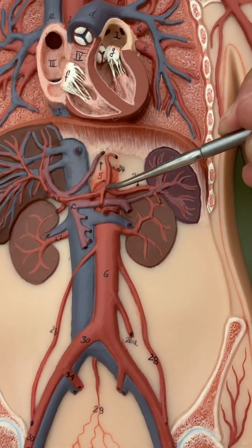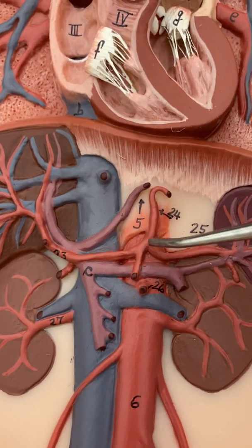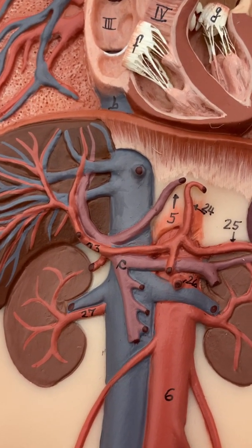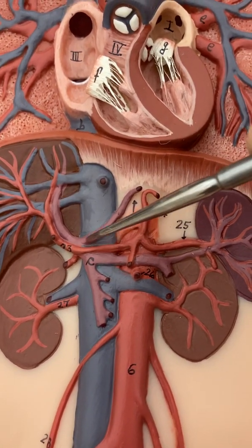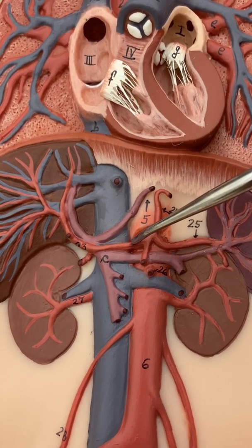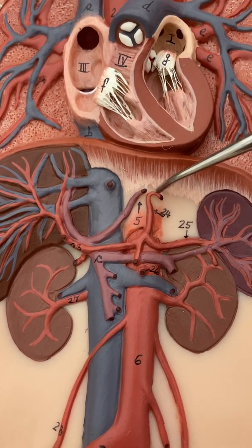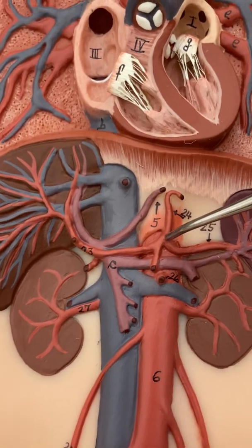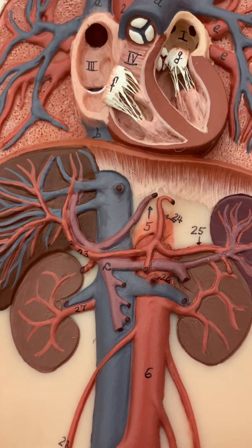The celiac trunk, as soon as it comes off the aorta, splits and goes to three different areas: a branch to the liver called the hepatic artery, a branch going to the stomach called the gastric artery, and a branch going to the spleen called the splenic artery.